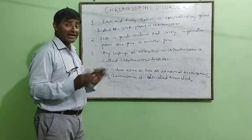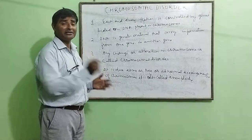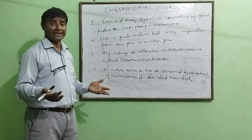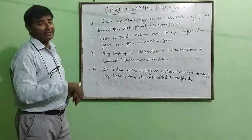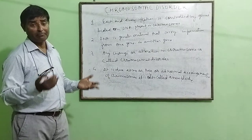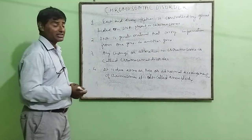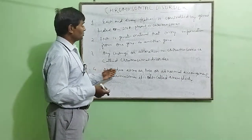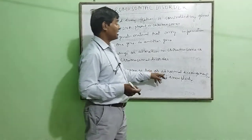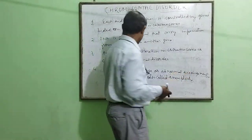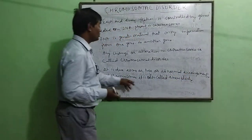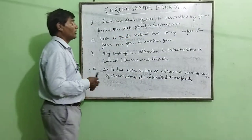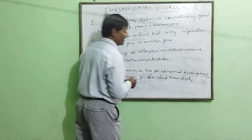If there is a change, deviation, or alteration in the chromosome number, then the person suffers from some disease. This is due to the excess or loss or abnormal arrangement of the chromosome, and this is called a chromosomal disorder.